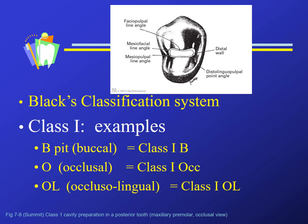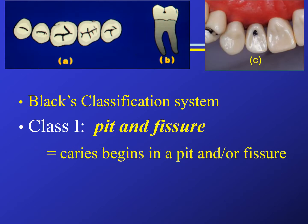We often use the first letter of the name of the surface — like capital O for occlusal, or OL for occlusal lingual. So again, class one is located in the pits and fissures of the teeth.